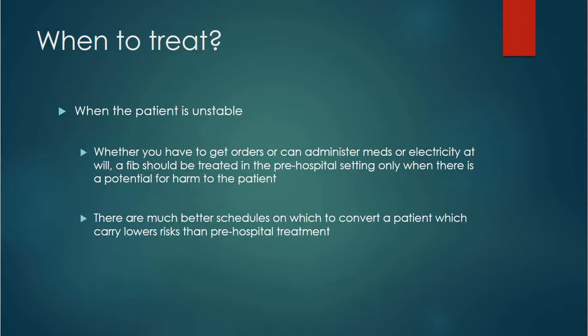We only treat AFib in the field when there's a potential for harm for the patient. When are they unstable? When they can't mentate, when their blood pressure is too low, when it's AFib with a rapid ventricular response and the heart just cannot keep that pace up for very long because it's going so fast and causing ischemia due to the tachycardia — that's when we treat AFib.